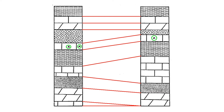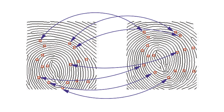Strat columns are the basis for an important geologic technique called stratigraphic correlation. It is the process of determining the equivalence of stratigraphic units at different sites based on a sequence of events inferred from strat columns. Events include lithological changes, fossils, and structural features like erosional surfaces. Think about the lithological changes, fossils, and structural features of a strat column like a fingerprint. The goal of stratigraphic correlation is to identify the similarities among strat columns and demonstrate that they represent the same sequence of events.